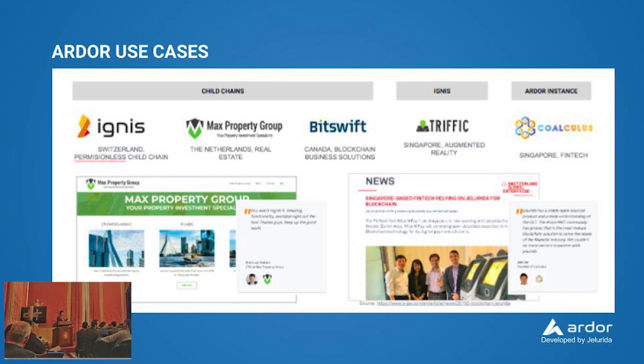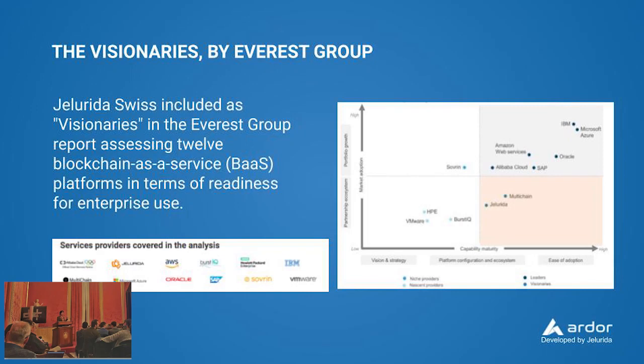Finally, very recently, Everest Group published the results of an assessment about enterprise readiness based on capability, maturity, and market adoption. The companies covered in this analysis were Gelurida as well as other big players like Alibaba, Amazon Web Services, IBM, Oracle, and Microsoft Azure. And Gelurida and the Ardor platform fall under the category of the visionaries.